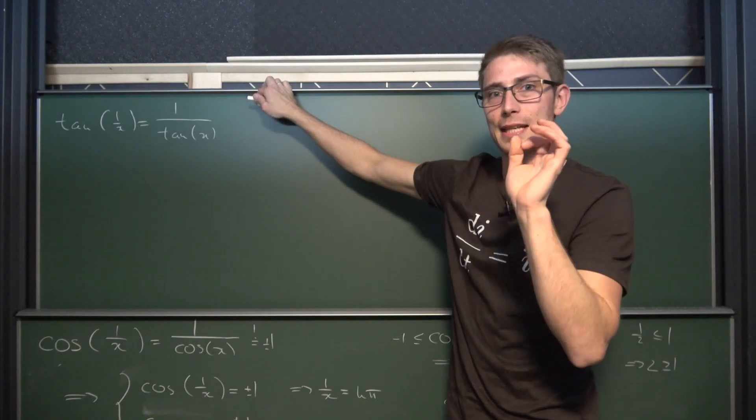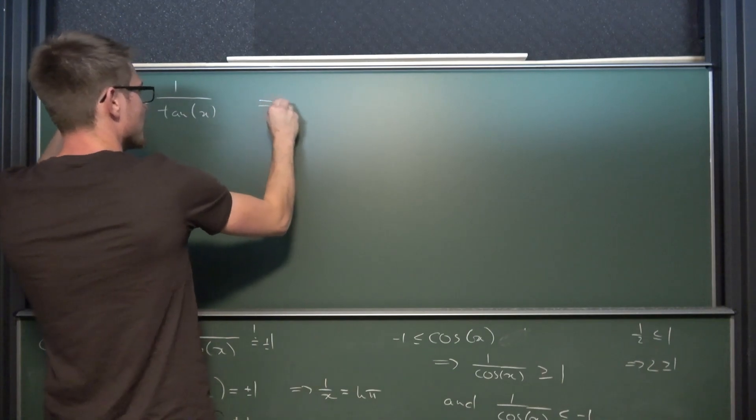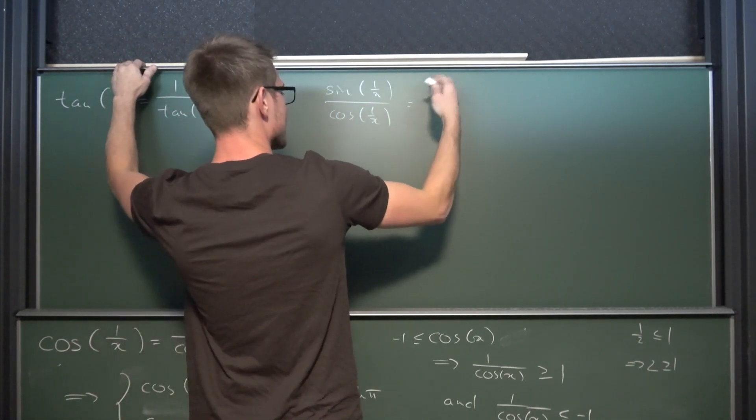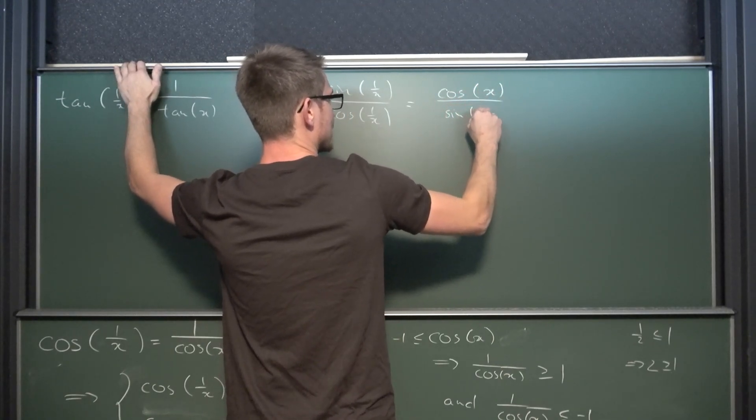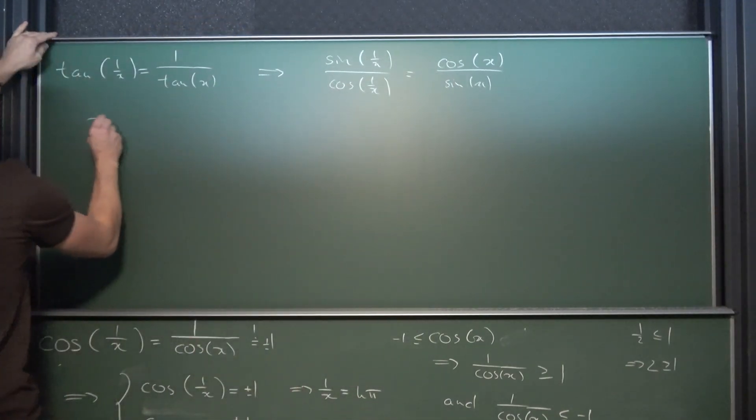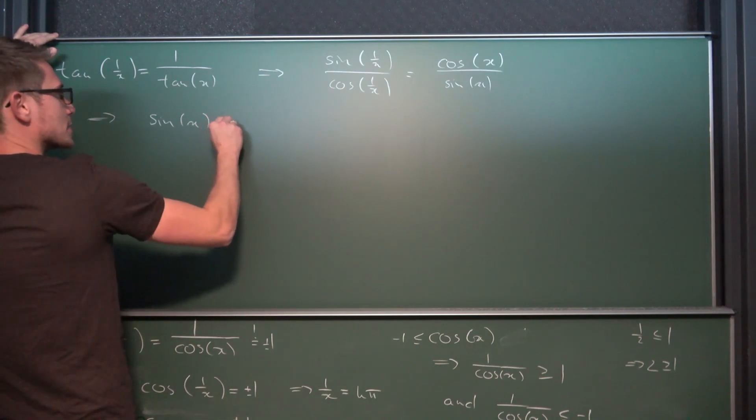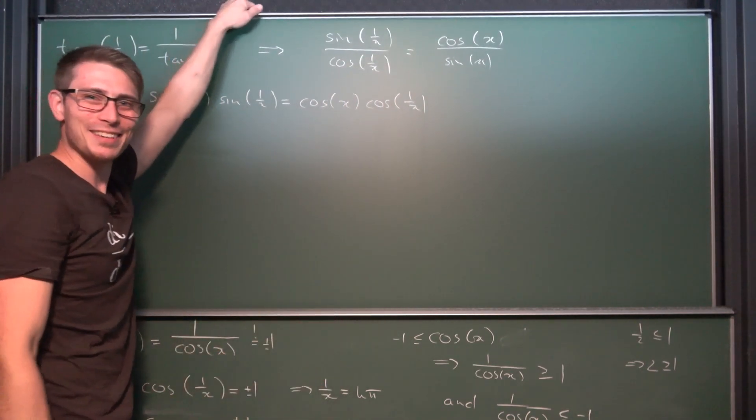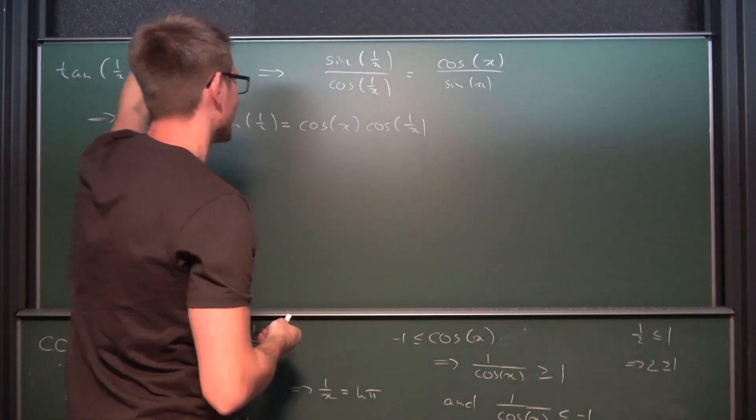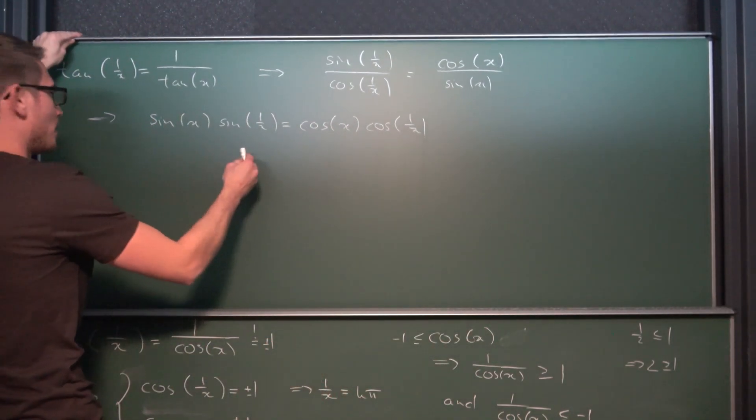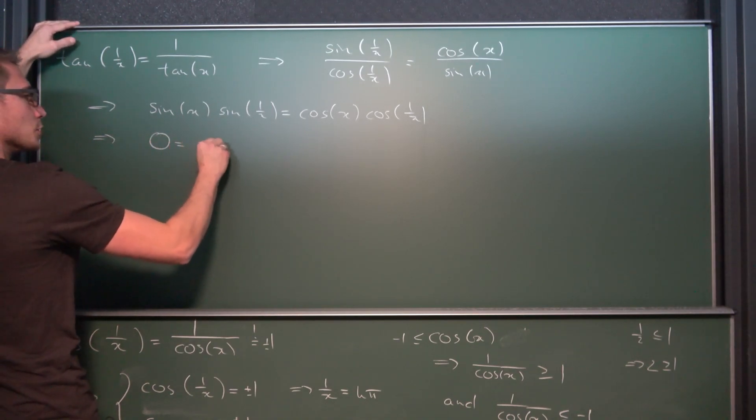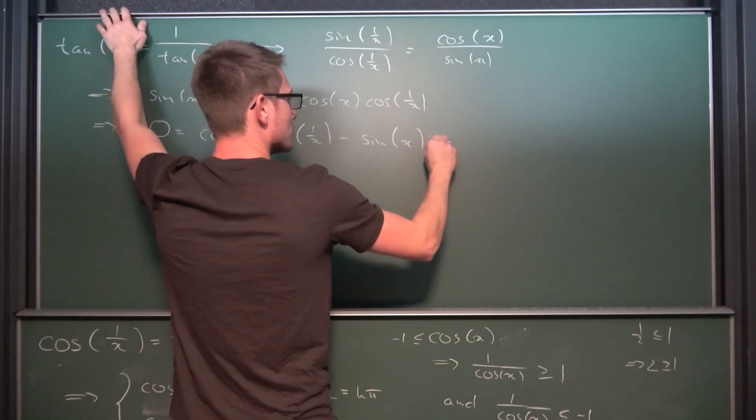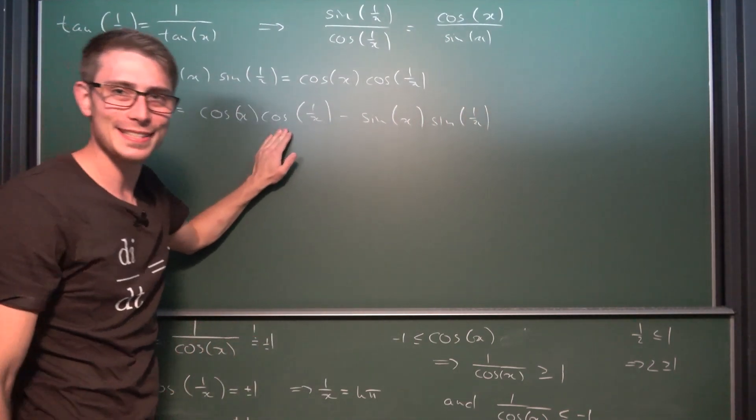The tangent. Cool thing about this is that we can express it as the sine over the cosine. And here we take the reciprocal on the cotangent. Giving us overall that the sine of 1 over x divided by the cosine of 1 over x is equal to, and here we take the reciprocal, cosine of x divided by the sine of x. And now what we're going to do is we're going to get rid of the fractions. Leaving us overall with sine of x times sine of 1 over x is equal to, I'm already smiling, cosine of x times the cosine of 1 over x.